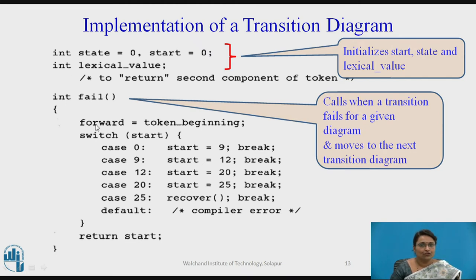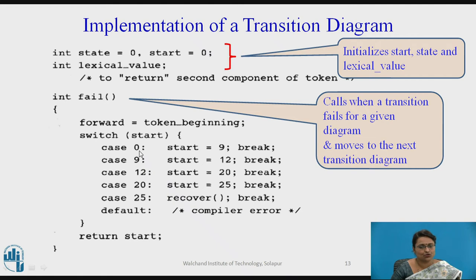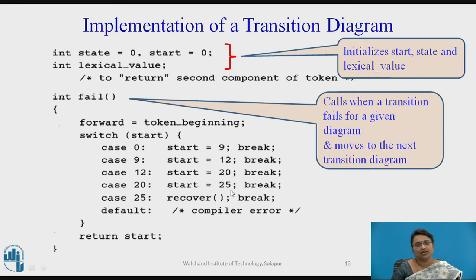In the fail function: 'forward' is set equal to 'token_beginning', meaning the pointer returns to the beginning of the lexeme. In the switch-case: if start is 0 (first transition diagram), the next transition diagram starts at 9, so start is set to 9. If start is 9, then the next is 12. If it is transition diagram 3, it goes to transition diagram 4 starting at state 20, then 25 and so on. If nothing matches, it calls the error recovery routine, meaning that lexeme is not accepted by any diagram. Finally, it returns start — the next transition diagram's start state.